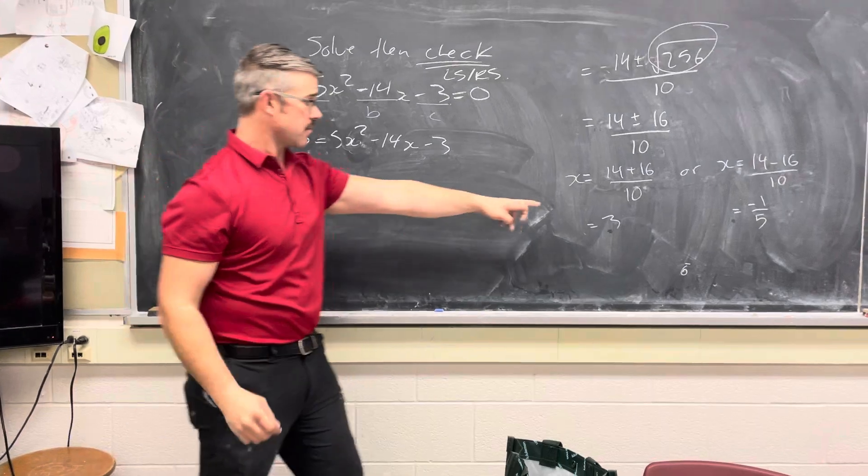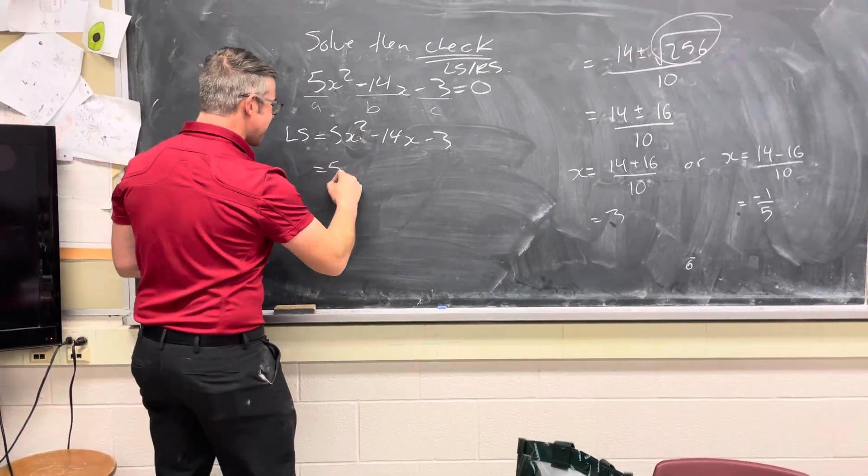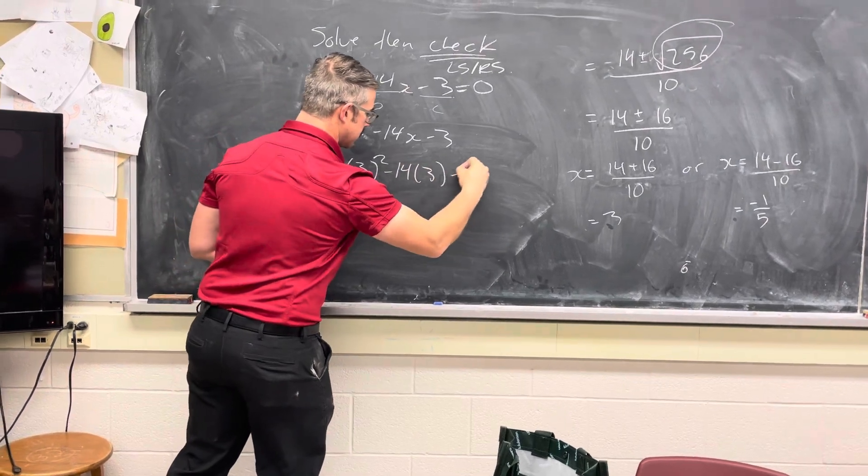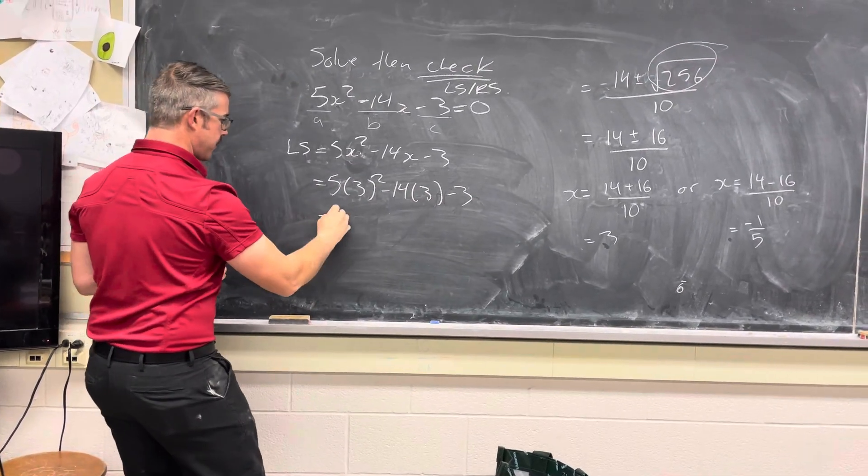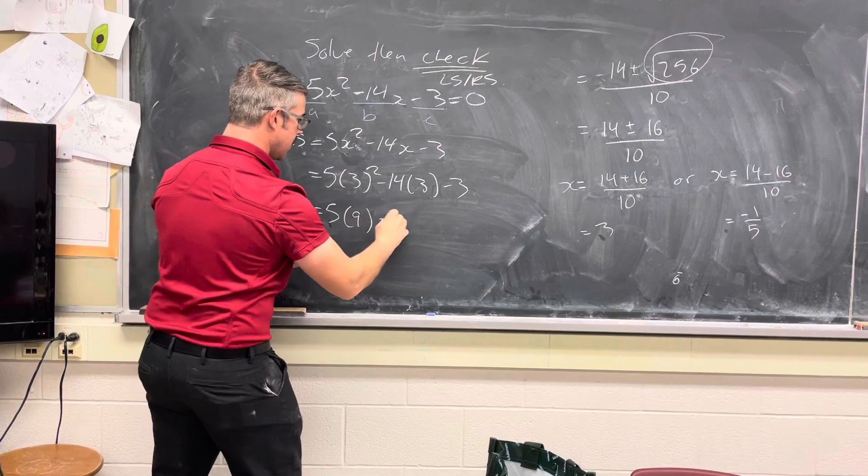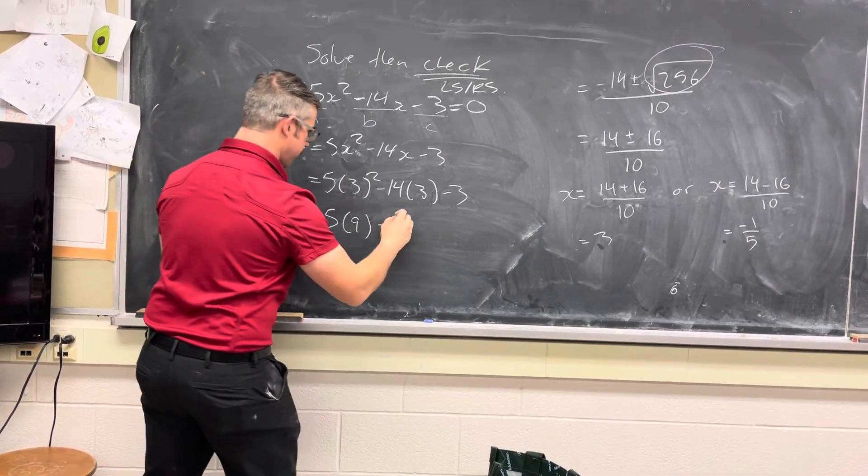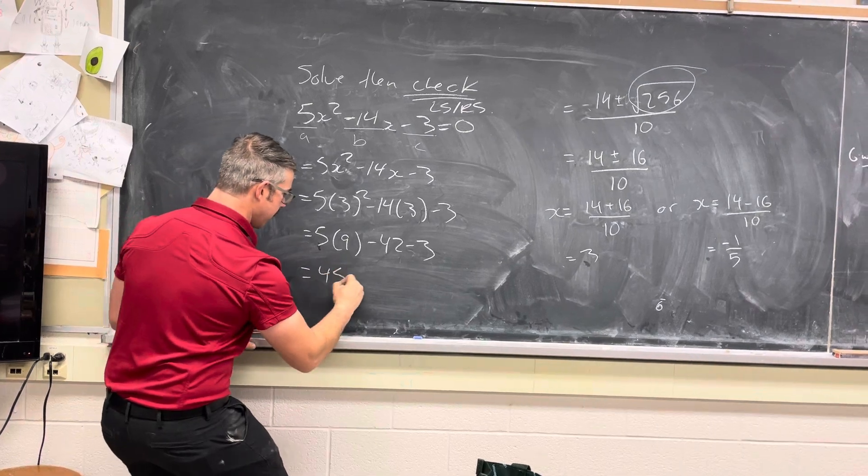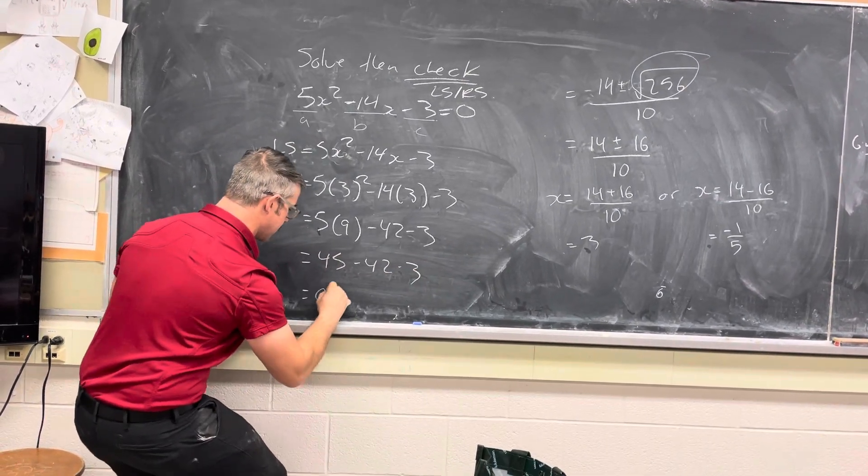And we'll check our root of 3. So that means I'm going to replace x with 3. And I've got to go do some math now. 3 squared is 9. 14 times 3 is negative 42. And 5 times 9 is 45. Minus 42 minus 3 is going to be equal to 0.